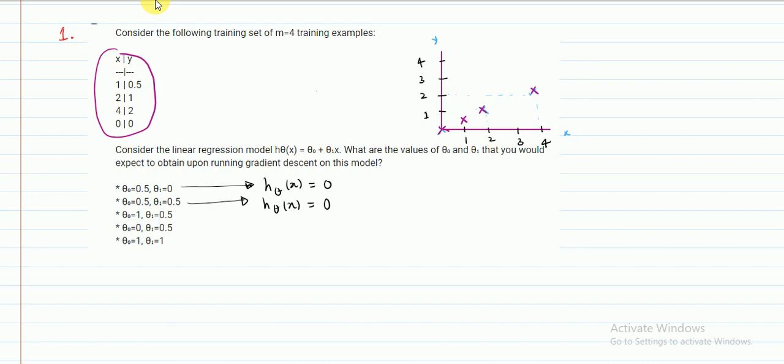Theta 0 equals 0.5 x. So if you draw this one, when x is equal to 0 then y, that is h theta x, will be 0.5. So somewhere here. And when h theta is equal to 0, then x will be 0. So if you draw this second one, this is how your hypothesis function will look like.